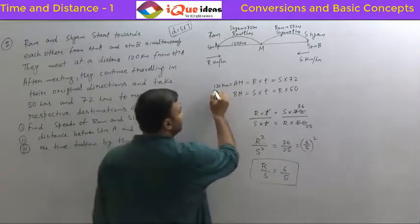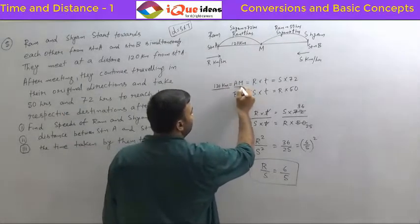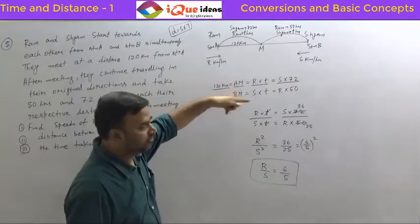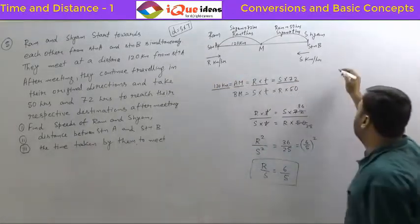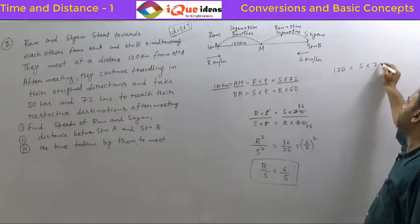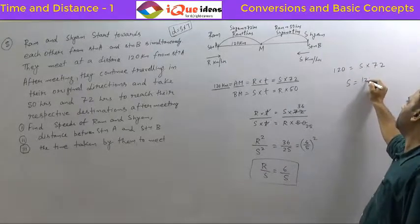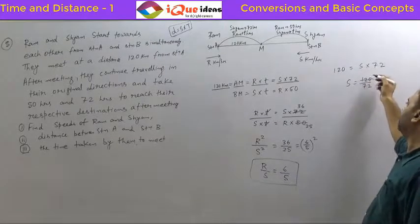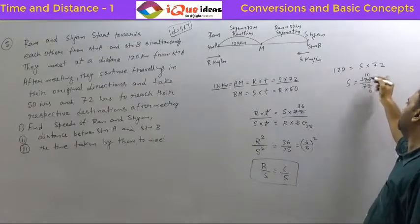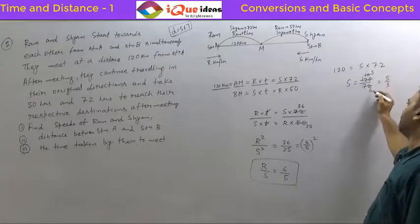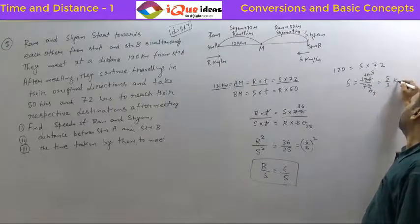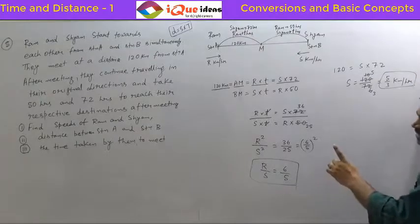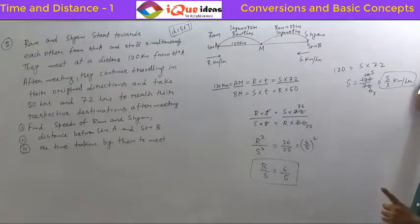We already have the information that AM = 120 km, and AM = s × 72. So 120 = s × 72, which gives s = 120/72 = 5/3 kilometers per hour. So the speed of Shyam is 5/3, or approximately 1.67 km per hour.